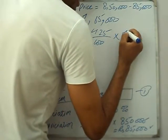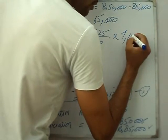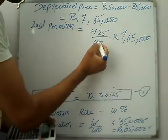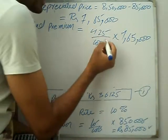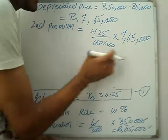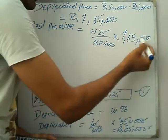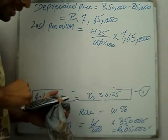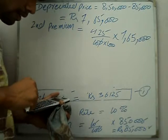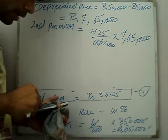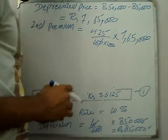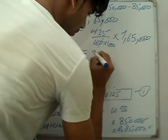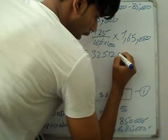For the second year, the worth of the car is now Rs. 7,65,000. Second premium: 4.25% multiplied by 7,65,000. Calculating: 425 divided by 100, multiplied by 7,65,000, divided by 10, gives Rs. 32,512.5.